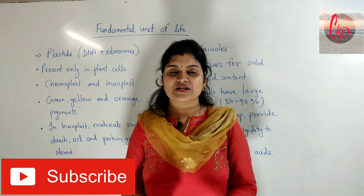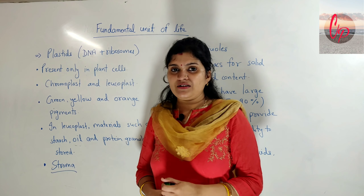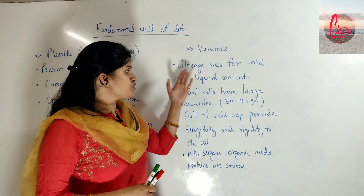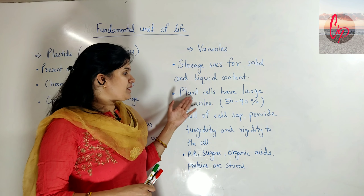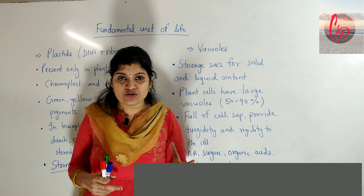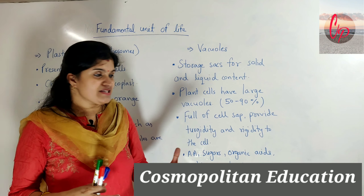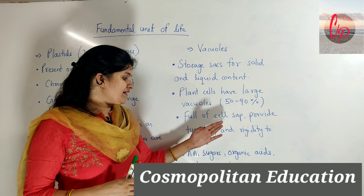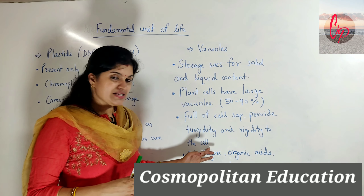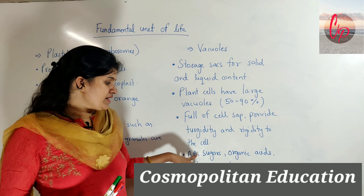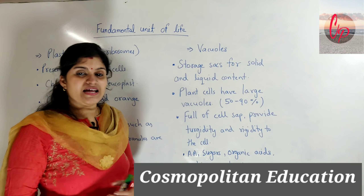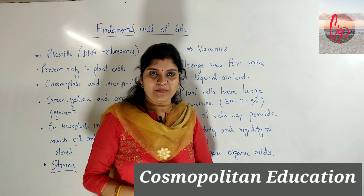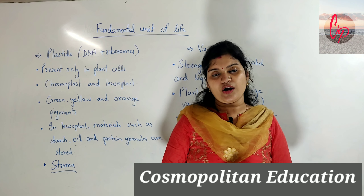Let's recall the key points about vacuoles: they are storage sacks for solid and liquid content; plant cells have larger vacuoles occupying 50 to 90 percent of the cell space; vacuoles are full of cell sap and provide turgidity and rigidity to the cell; and materials like amino acids, sugars, organic acids, and proteins are stored inside them. This completes our discussion on plastids and vacuoles, finishing the cell organelles.